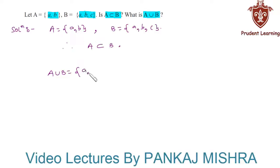{a, b, c}, which is equal to set B itself. Hence, A⊆B and A∪B = B. This completes our solution.